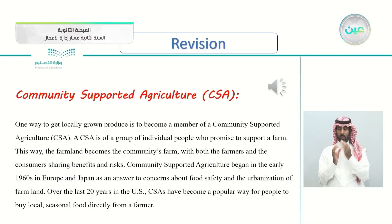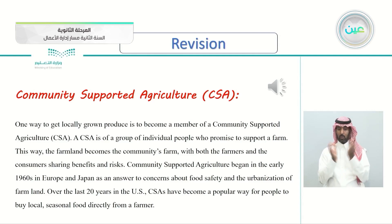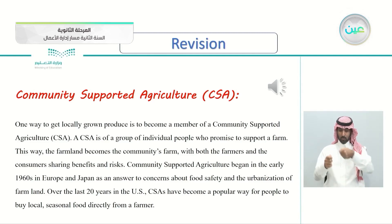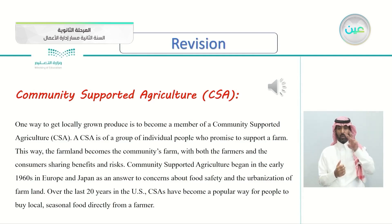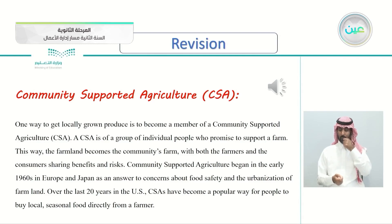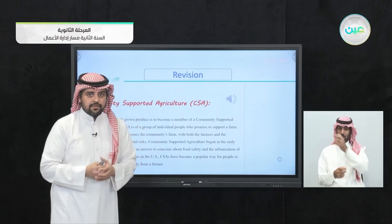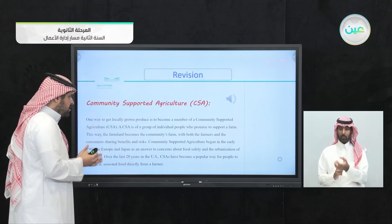The second article is about Community Supported Agriculture, or CSA. A CSA is a group of individual people who promise to support a farm. The farmland becomes the community's farm, with both farmers and consumers sharing benefits and risks. Community supported agriculture began in the early 1960s in Europe and Japan as an answer to concerns about food safety and the urbanization of farmland. Over the last 20 years in the US, CSAs have become a popular way for people to buy local seasonal food directly from a farmer.